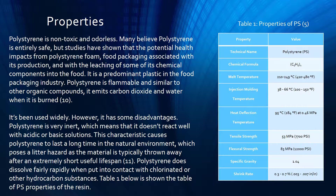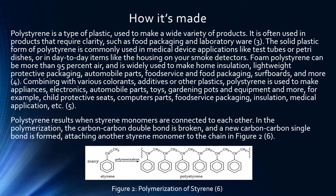On the right side you can see the properties table. The technical name is polystyrene, abbreviated PS. Chemical formula is C8H8, melt temperature 210–249°C, injection molding temperature 95°C, heat deflection temperature, tensile strength 7,700 psi, flexural strength 12,000 psi, specific gravity 1.04, and shrink rate 0.3 to 0.7 percent.